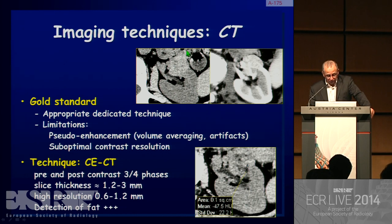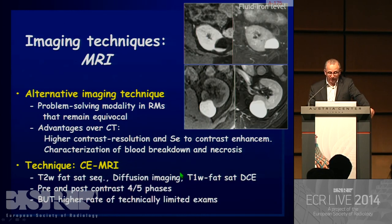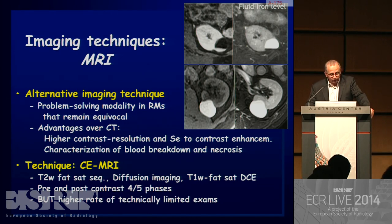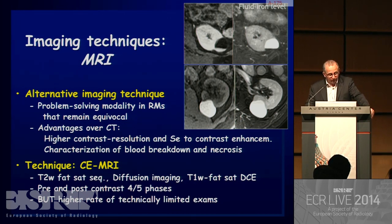At conventional 2 mm acquisition, and at 0.6 mm, you can detect areas of fat that were not seen on thicker slices. MRI is playing a growing role as an alternative imaging technique, solving problems that remain equivocal with either contrast-enhanced ultrasound or contrast-enhanced CT.